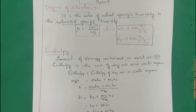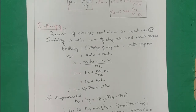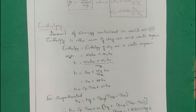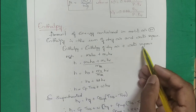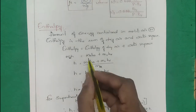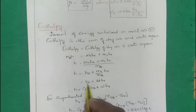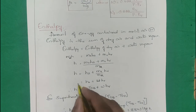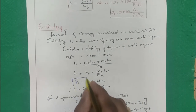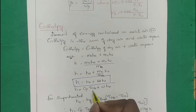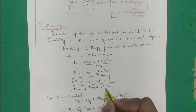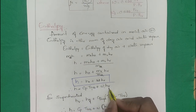The final and very important formula is enthalpy — the amount of energy contained in moist air. Enthalpy = enthalpy of dry air + enthalpy of water vapor. This can be written as h = Cp × Tdry_bulb + W × hv, where hv is the enthalpy of vapor.